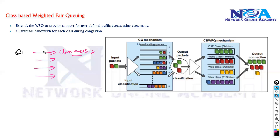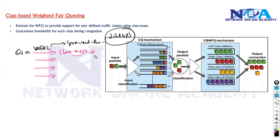Class one holds VIP or SQL traffic and should receive a guaranteed bandwidth of 256 kbps in case of congestion. We can define specific fixed bandwidth values or fixed bandwidth percentage values for each queue. In case of congestion, the router ensures that traffic leaving that class gets this minimum guaranteed bandwidth.